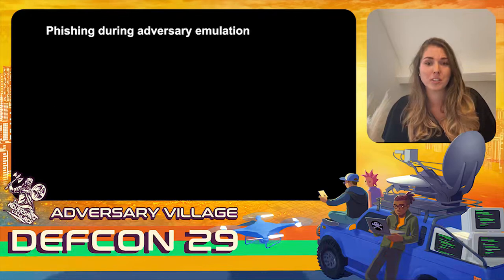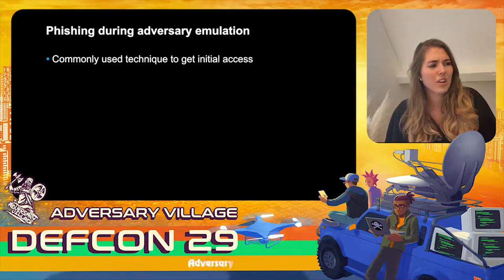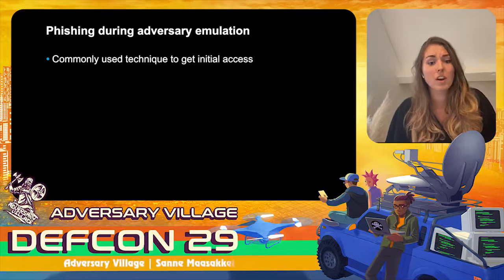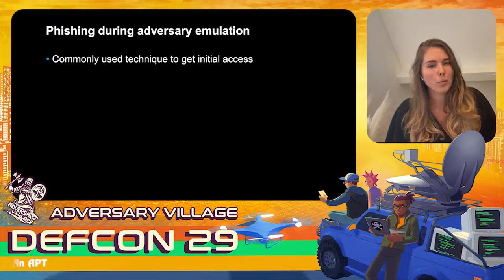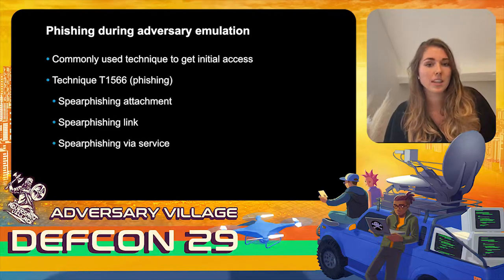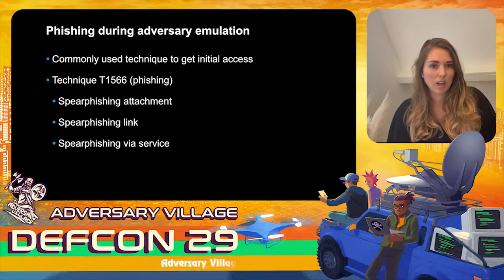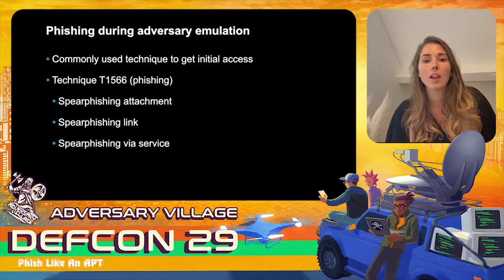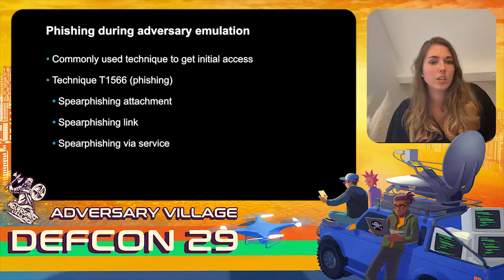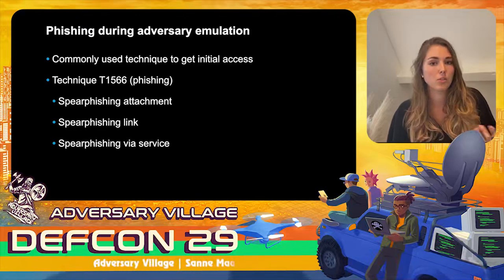So, phishing during adversary simulation. We know that phishing is a commonly used technique to get initial access — research shows around 90% of attacks start with a phishing email or a weaponized document. Looking at the MITRE ATT&CK framework, technique T1566 is defined as phishing with three sub-techniques. The first is spear phishing attachment — a phishing email with an attachment like a malicious Word doc or archive that the victim opens and executes.